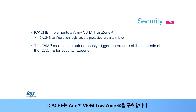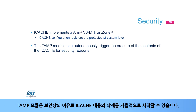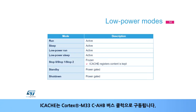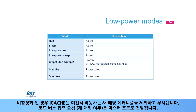iCache implements an ARMv8-M TrustZone. iCache registers are protected at system level, enabling only secure software to access them when TrustZone is enabled. The TAMP module can autonomously trigger the erasure of the contents of the iCache for security reasons. iCache is clocked by the Cortex-M33 C-AHB bus clock, so it has the same clock domain as the Cortex-M33 core, the same clock frequency, and the same behaviour during low power modes. When disabled, iCache is bypassed except for the remapping mechanism, which remains functional.